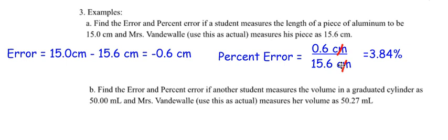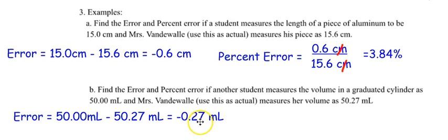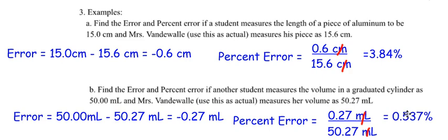What did you find with letter B? You are going to subtract: your value is 50 mL and Mrs. Vandewalle's actual value is 50.27 mL, giving negative 0.27 mL. For percent error, take the absolute value of negative 0.27, divide by 50.27 — notice the milliliters cancel out — then multiply by 100%, giving 0.537%.